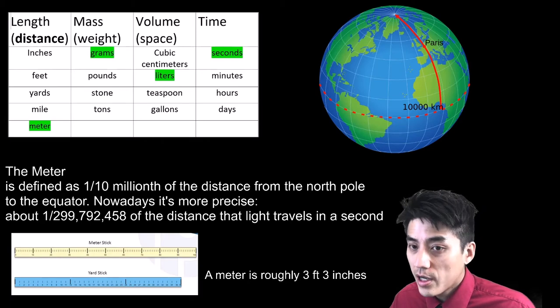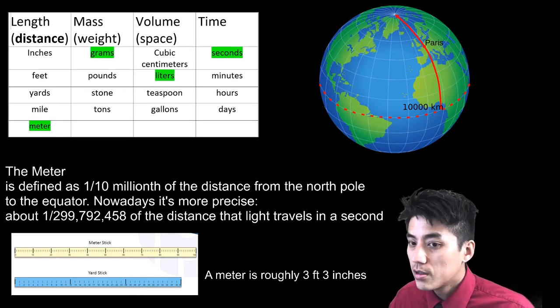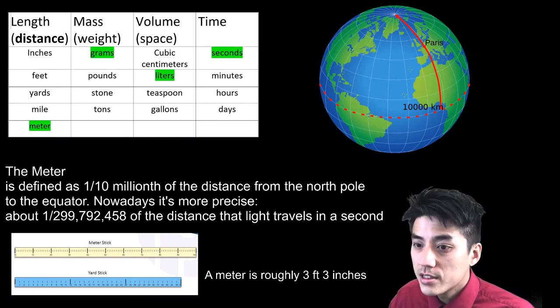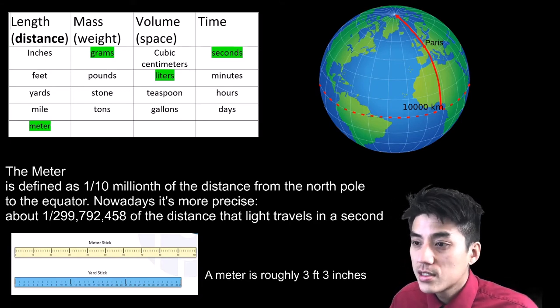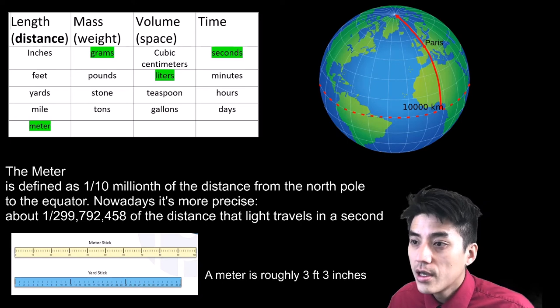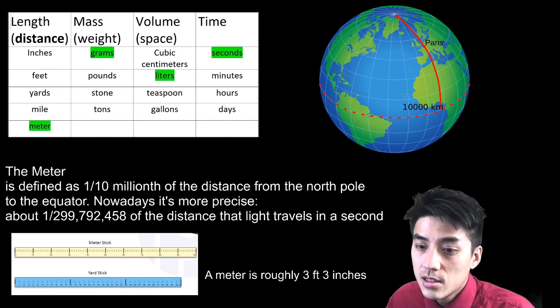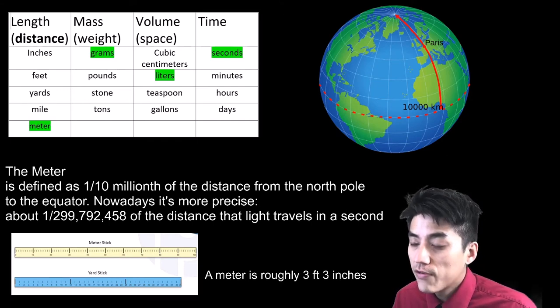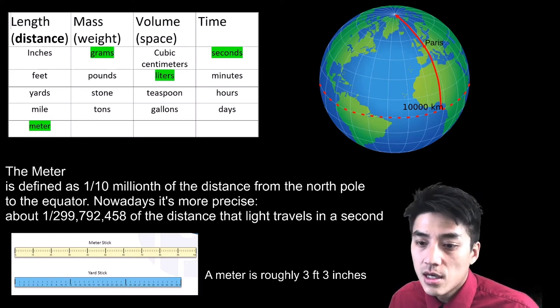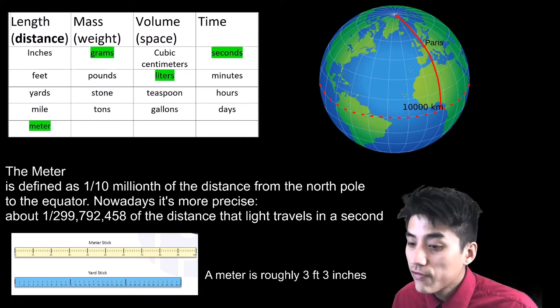You need to have a basic feel for each of these units before I start teaching you how to convert in the metric system. So when you talk about length, the base unit for length is the meter. And the meter was originally defined as 1/10 millionth the distance from the North Pole to the equator. Nowadays, it's a bit more precise. It's defined as 1/300 millionth of the distance that light travels in a second. So to give you a visual, a meter is roughly 3 feet 3 inches.